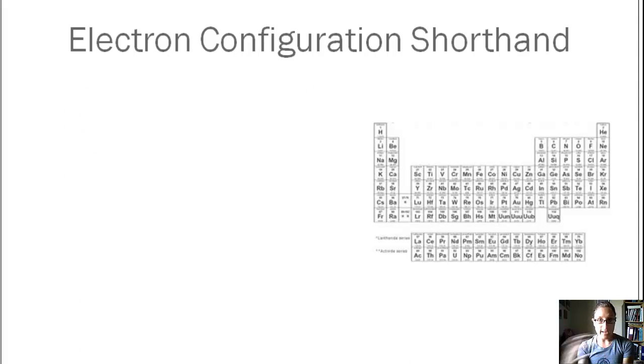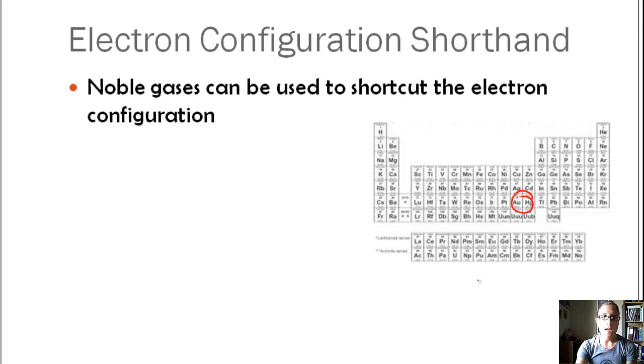This could add up to a lot of writing if, once we got way down into the periodic table. There's also a way to shorthand our electron configuration. We can use noble gases to shortcut it. Let's take a look at sodium. Sodium is right here. It has 11 electrons. If we wrote out its whole electron configuration, it would be 1s2, 2s2, 2p6, and 3s1. That's not too long, but it could get longer as we keep going.